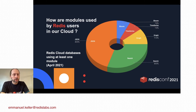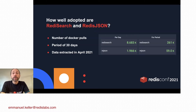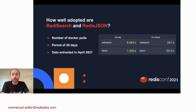Those modules are already popular for people using Redis on the cloud. JSON and Search are the most used ones — they are already mature modules. You can use Redis Search and Redis JSON via Docker Hub, where Docker images are available and both modules are downloaded more than 10,000 times a day.